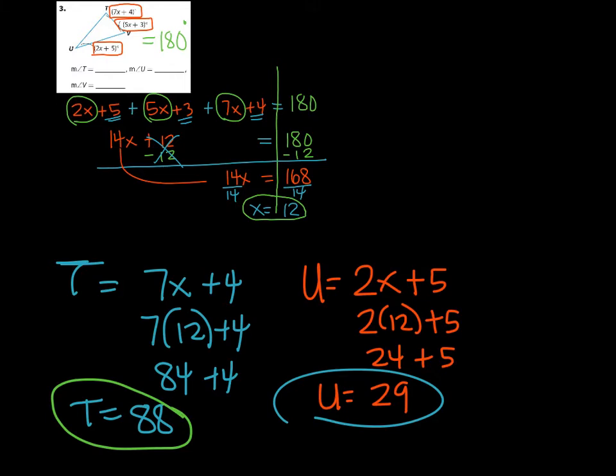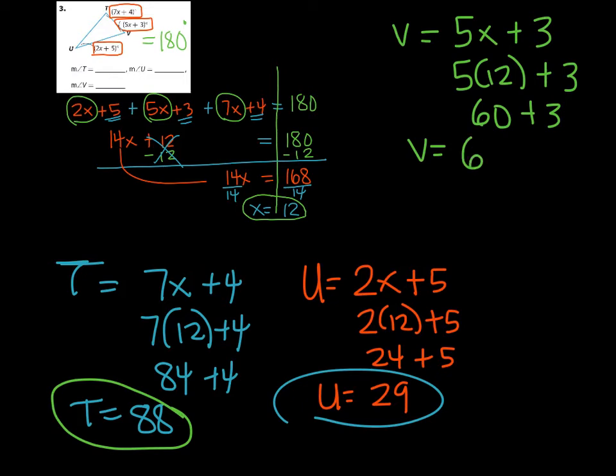And the last angle we're going to look for is angle V, and that says 5x plus 3. I'm going to put that one up here because I'm running out of space. Angle V, the expression was 5x plus 3, x is still 12, so I'm going to have 5 times 12 and then add 3 more. 5 times 12 is 60. If you add 3 more, that tells you the total value of angle V is 63 degrees. And that's how you would use all these little expressions that are in the angle spots to end up finding the real true value of each angle.